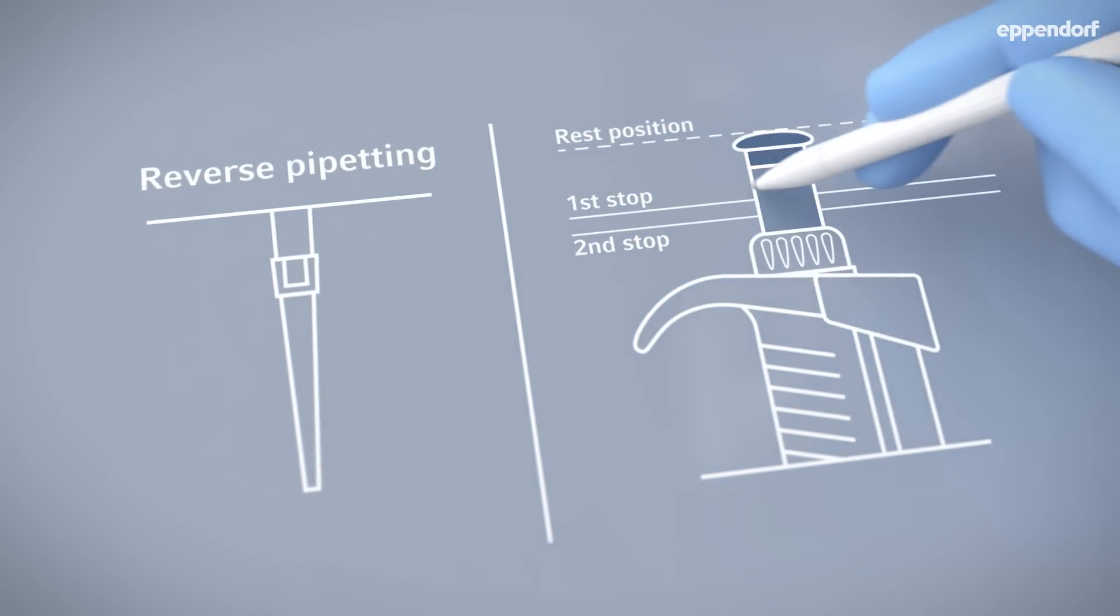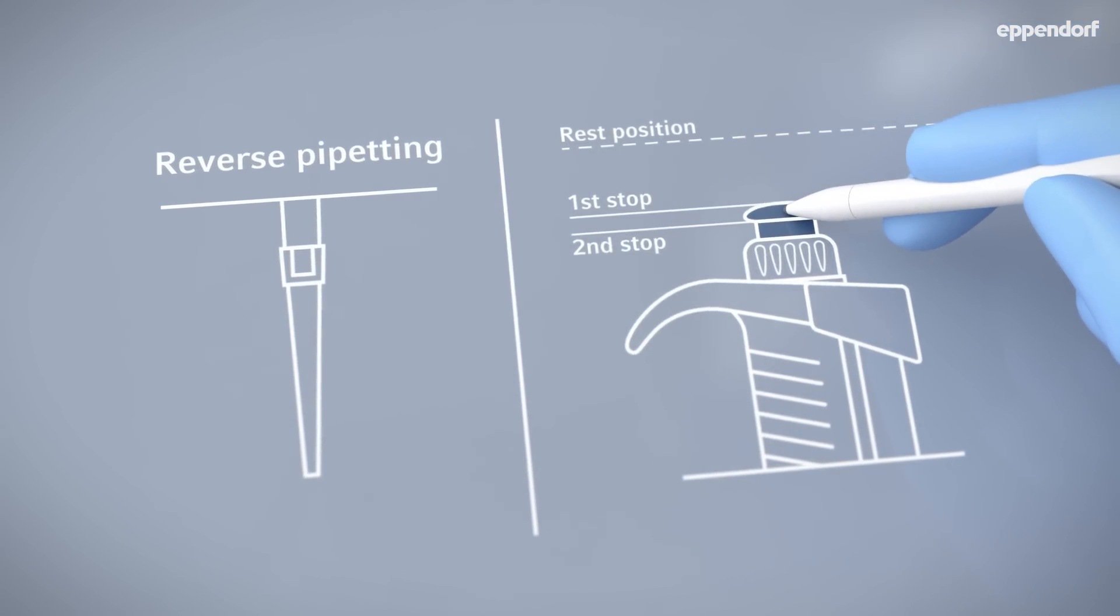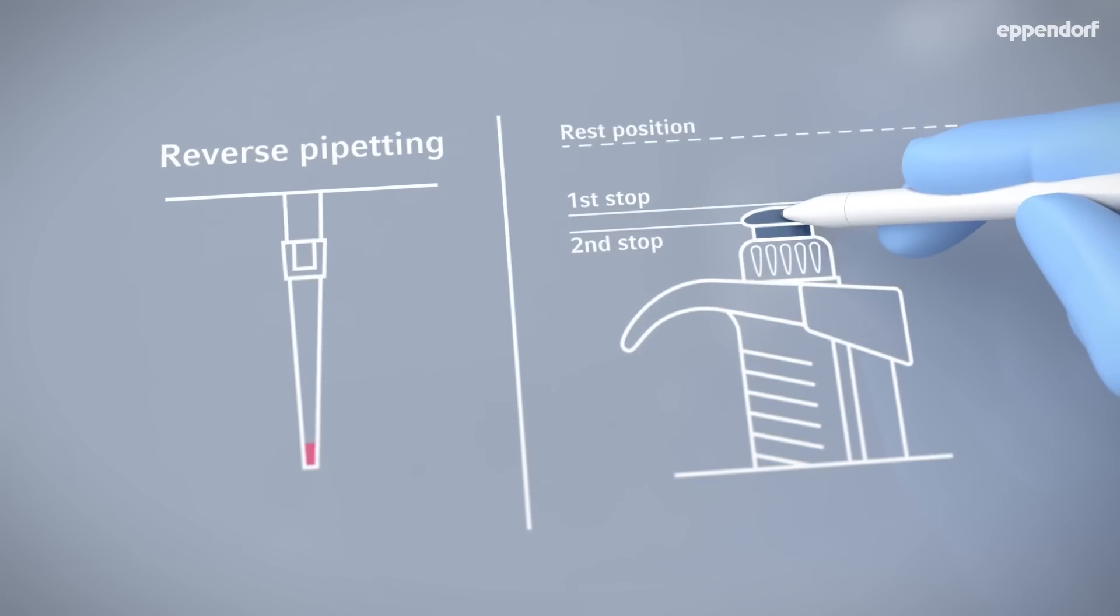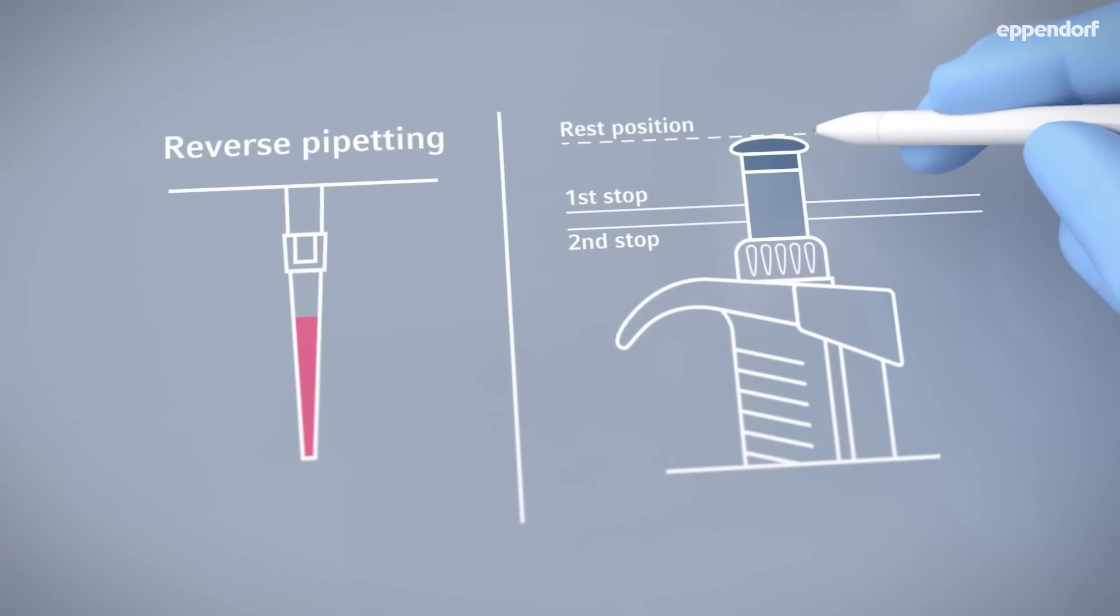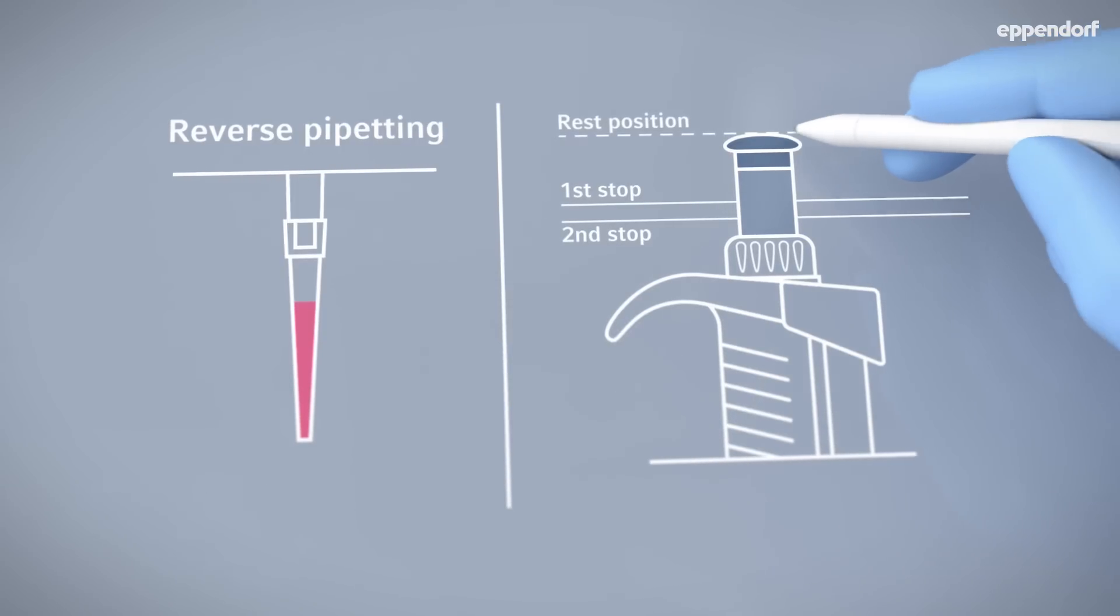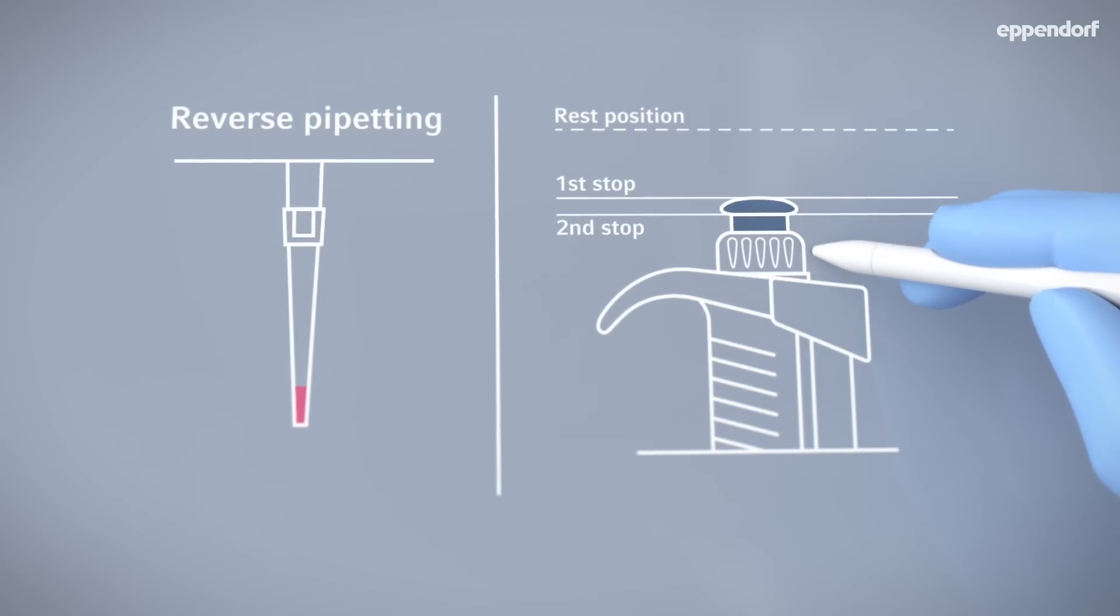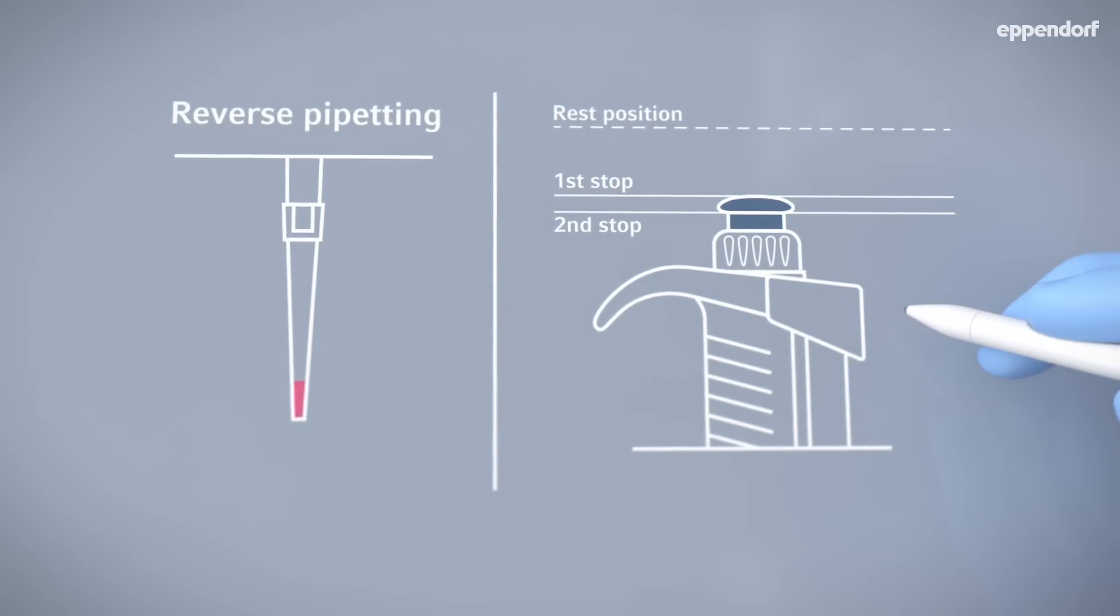Reverse pipetting works better for certain liquids and pipetting challenges. Push the operating button down to the second stop. Immerse the tip and move the operating button all the way up. Dispense the liquid by pushing the operating button down to the first stop. Some liquid will remain in the tip. You can discard it or return it to the aspirating vessel.